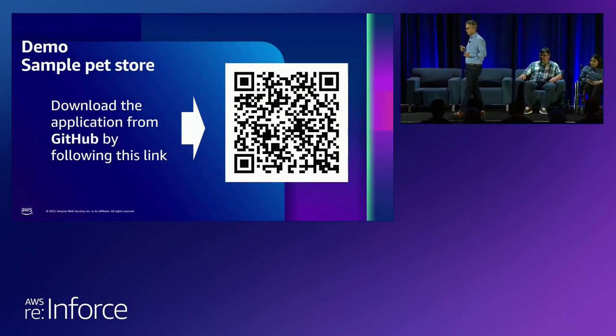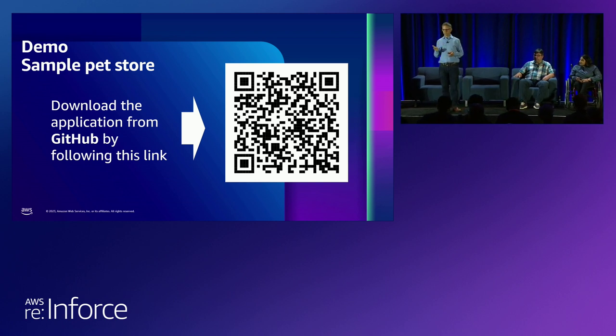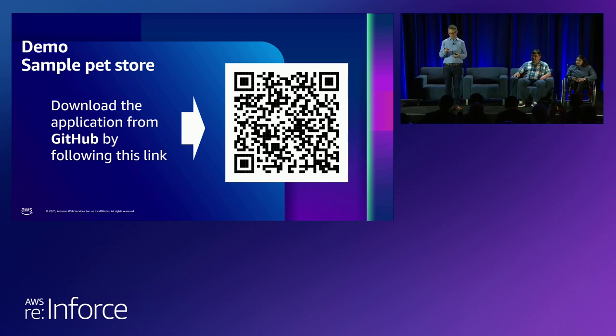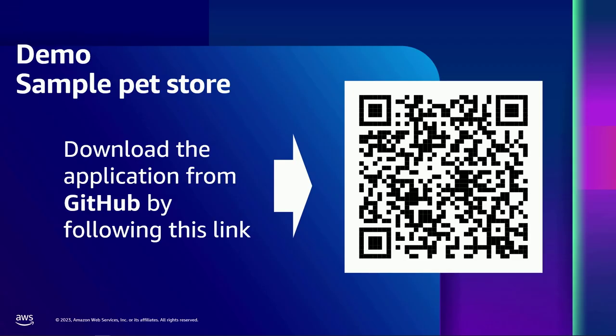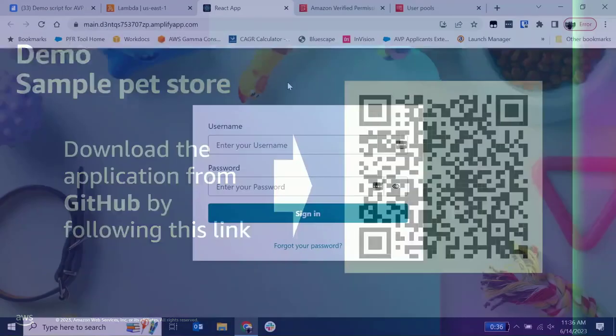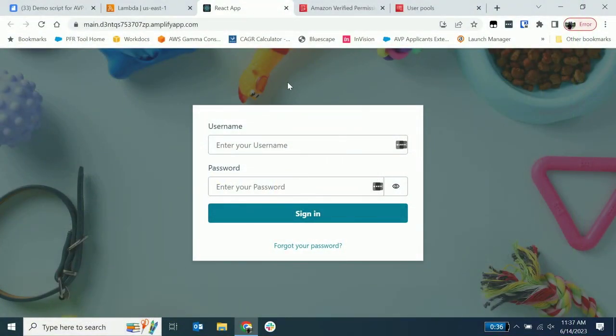This sample application is in a public GitHub repo. You can download it, work through it, connect to Verified Permissions, and create yourself a policy store. Abi is going to join me on stage to help demo it. You download and install the application into Amplify. It uses Cognito to manage users. Verified Permissions can be used with any identity provider — it doesn't have to be Cognito — but in this sample application we use Cognito to manage identities.